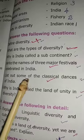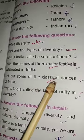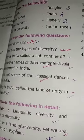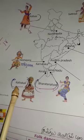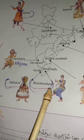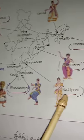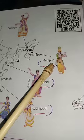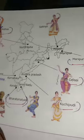List out some of the classical dances of India: Kathakali, Bharatanatyam, Kuchipudi, Odissi, Manipuri, and Kathak.